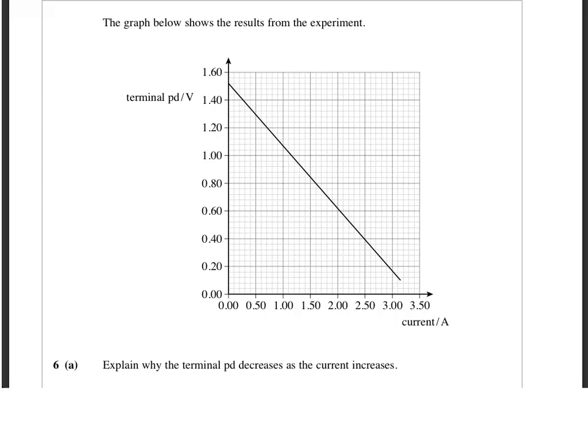Let's have a look at the question then. Quite an unusual question, don't see this very often. It's given us a graph. It says the graph below shows the results from the experiment. And we've got a graph there of terminal PD against current. And it says explain why the terminal PD decreases as the current increases.